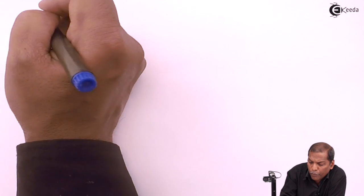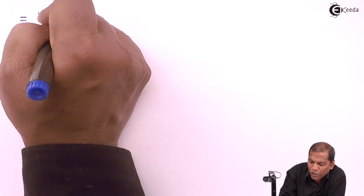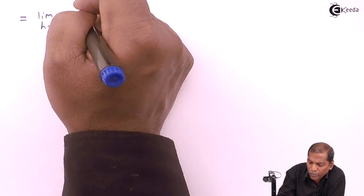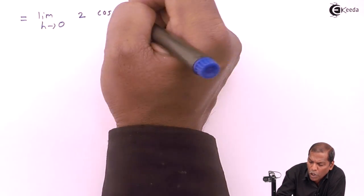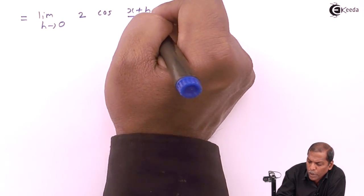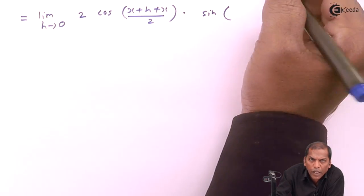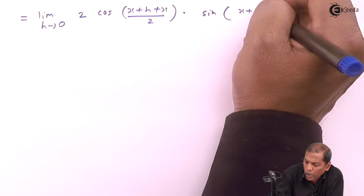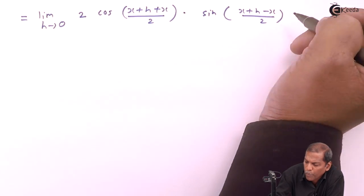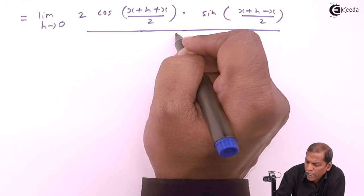So in present case x+h represents c and x represents d. So the next step will be equal to limit h tends to 0, 2 times cos in bracket (x+h+x) upon 2, into sin in bracket (x+h-x) upon 2, and then all thing divided by h.